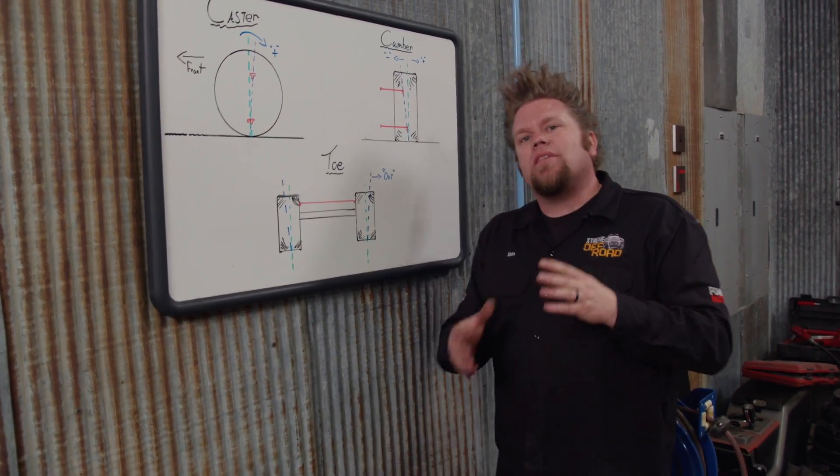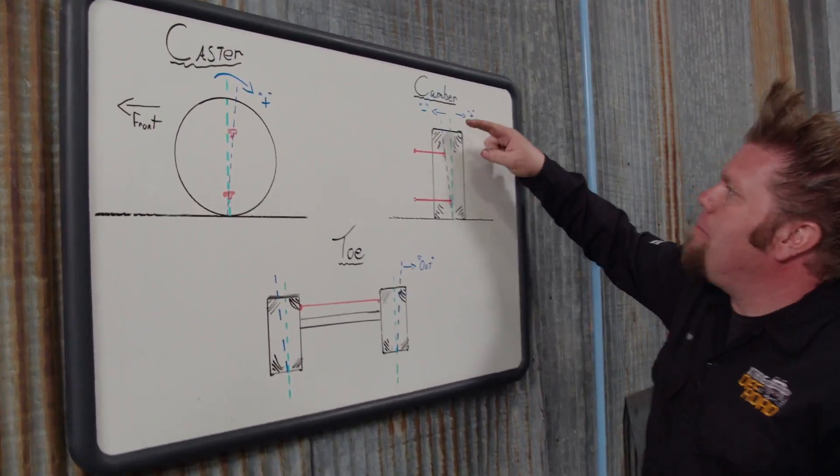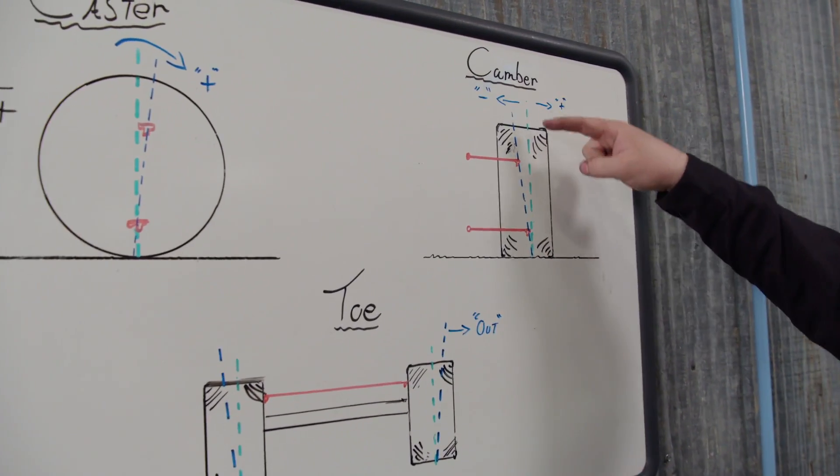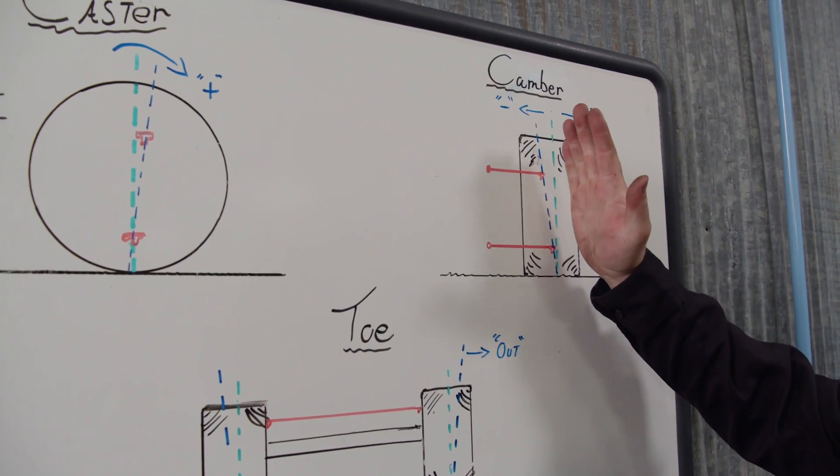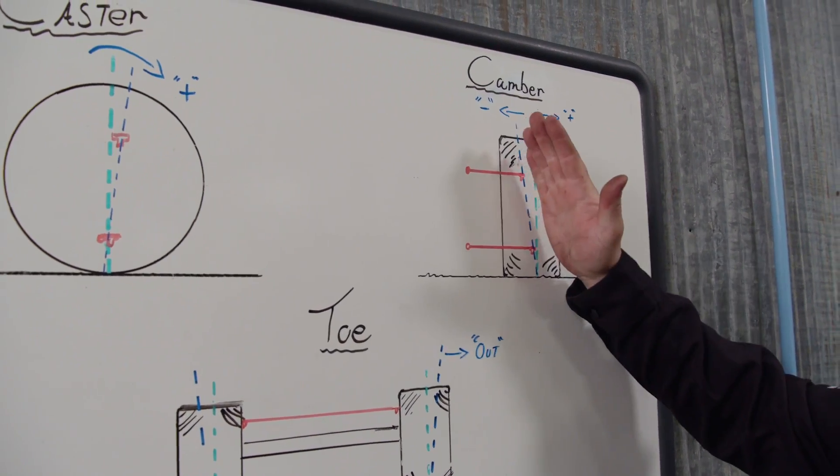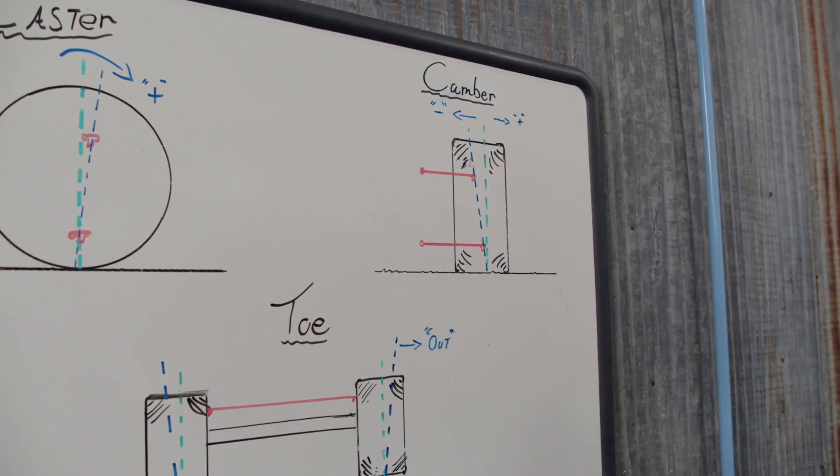The next angle is camber. Once again, we're comparing it to true vertical, and we're comparing whether the tire is leaned in, which is negative camber, or leaned out, positive camber.